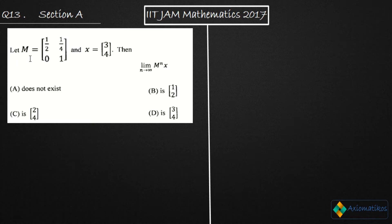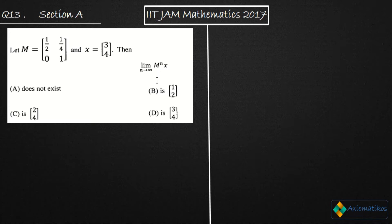We have a 2×2 matrix M and x is a 2×1 vector [3, 4]. They are asking for the limit as n goes to infinity of Mⁿx. The answer options are: does not exist, converges to one of three given vectors. So we need to calculate that limit.